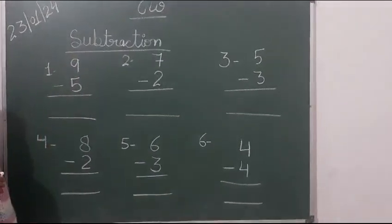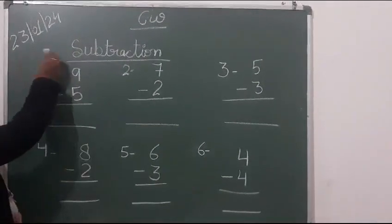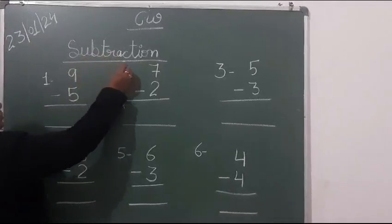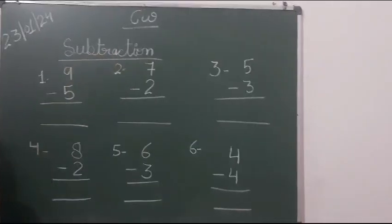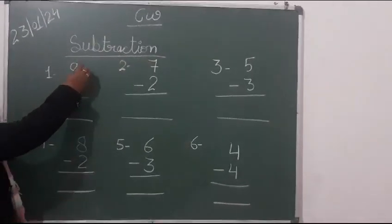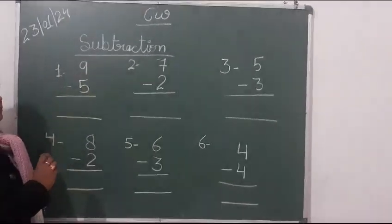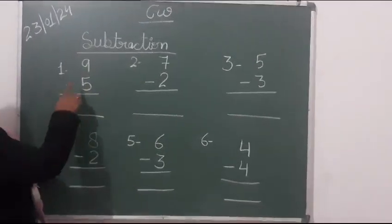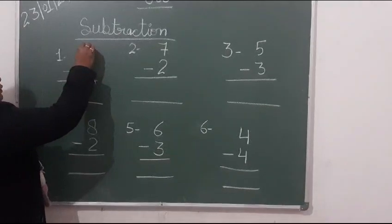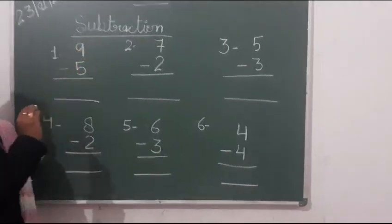First of all, take out your notebook and write your date, classwork and subtraction. If you want to add subtraction, then subtraction is the talent. If you want to add minus, then you can add all the lines to the left.